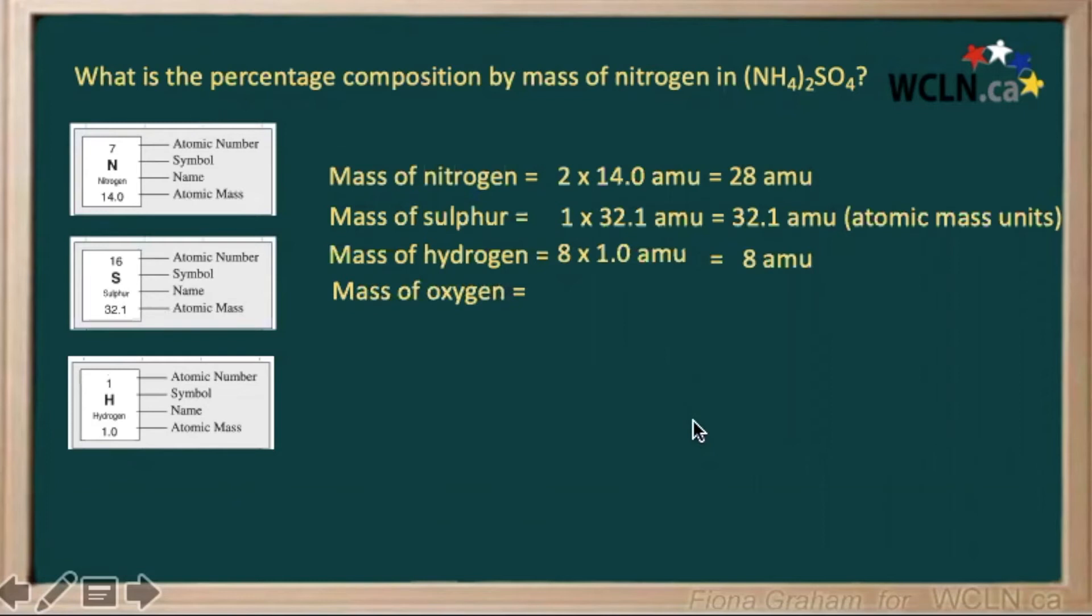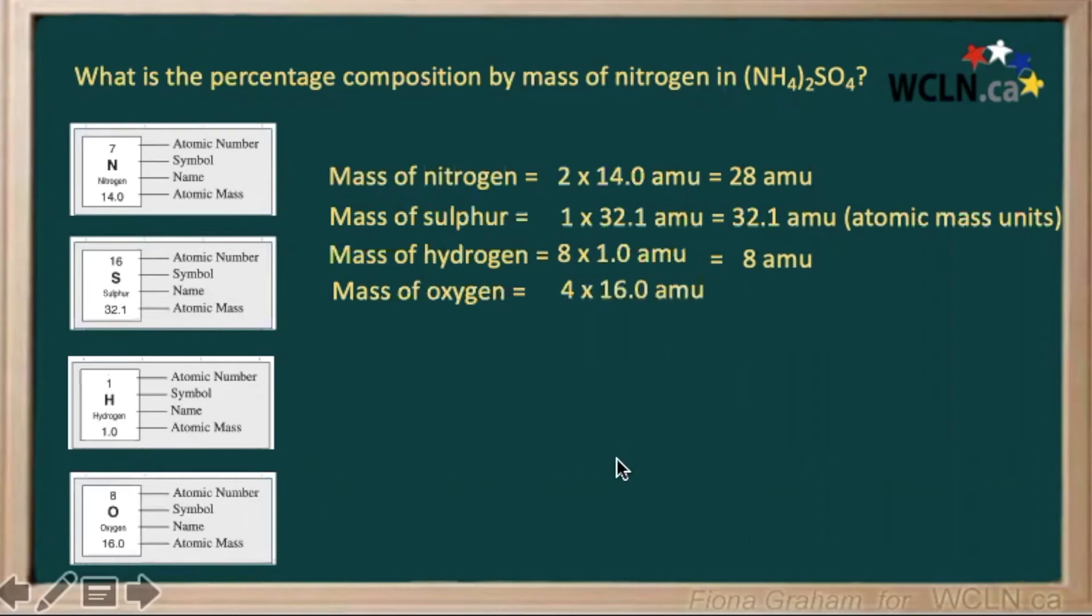And the mass of our oxygen would be four times the atomic mass weight of our oxygen, giving us a total of 64 atomic mass units.